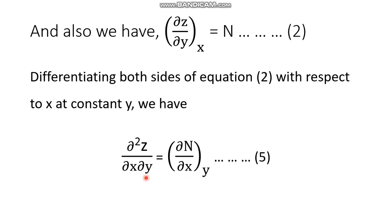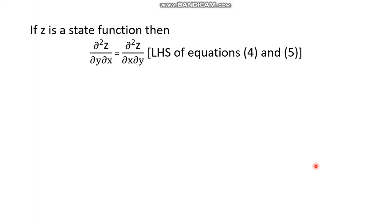Note that dz is a perfect differential because z is a state function. z is operated by taking two different paths: differentiating with respect to x followed by differentiation with respect to y in equation 4, and in equation 5, first differentiating with respect to y followed by differentiation with respect to x. These two paths are different, but since z is a state function, it is path independent.